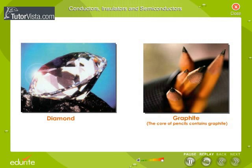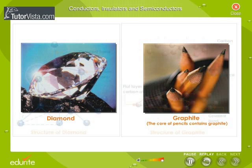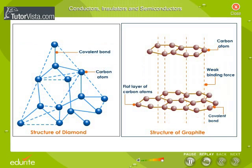Have you ever wondered why Diamond and Graphite, the two different forms of Carbon, behave differently? Diamond and Graphite behave differently due to the difference in the arrangement of atoms in their solid structure.